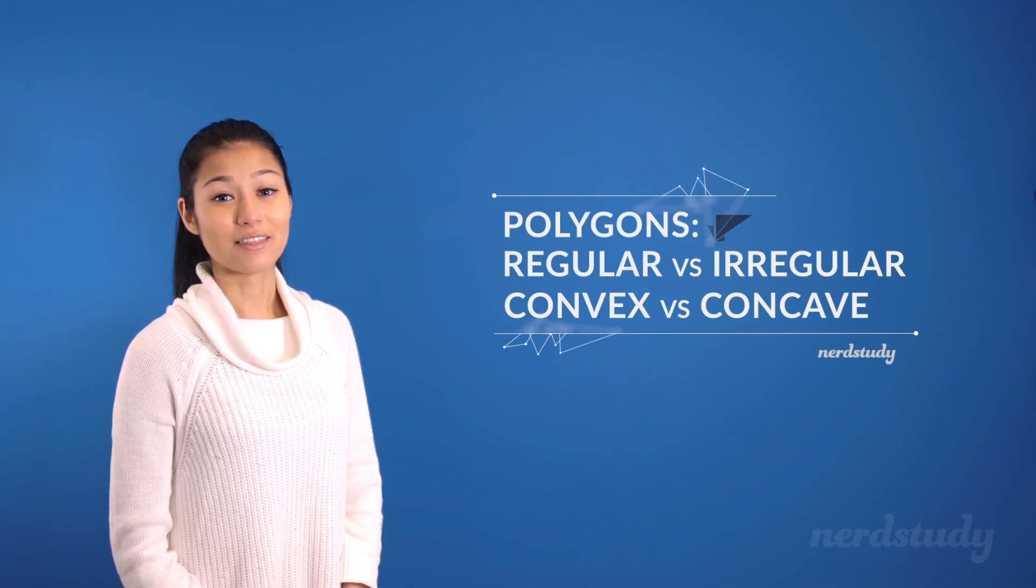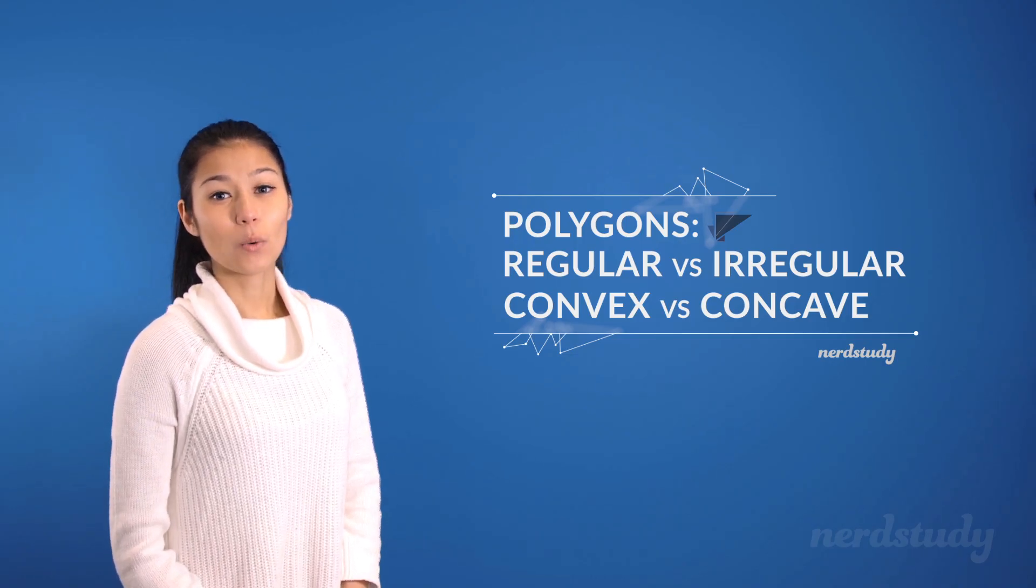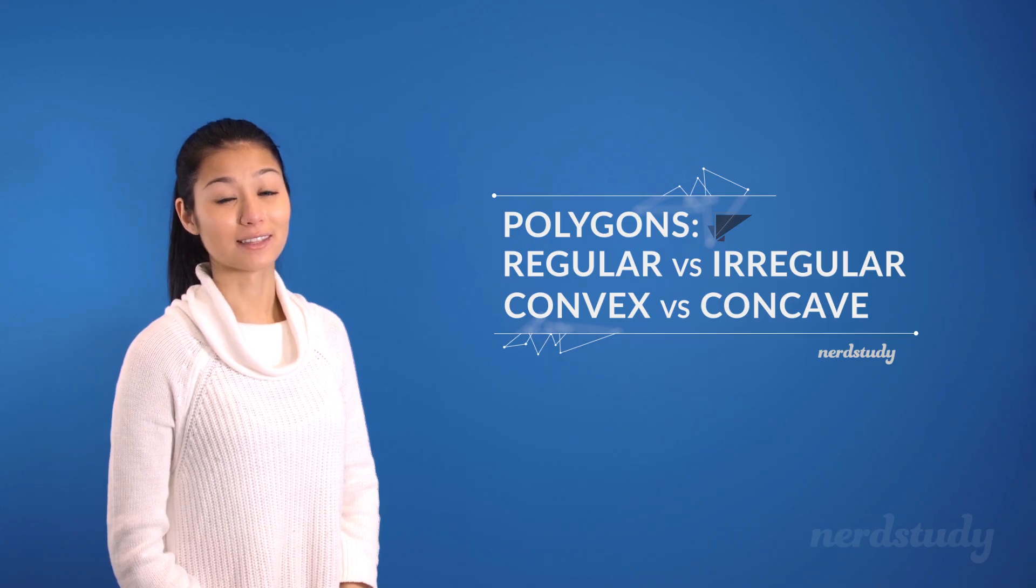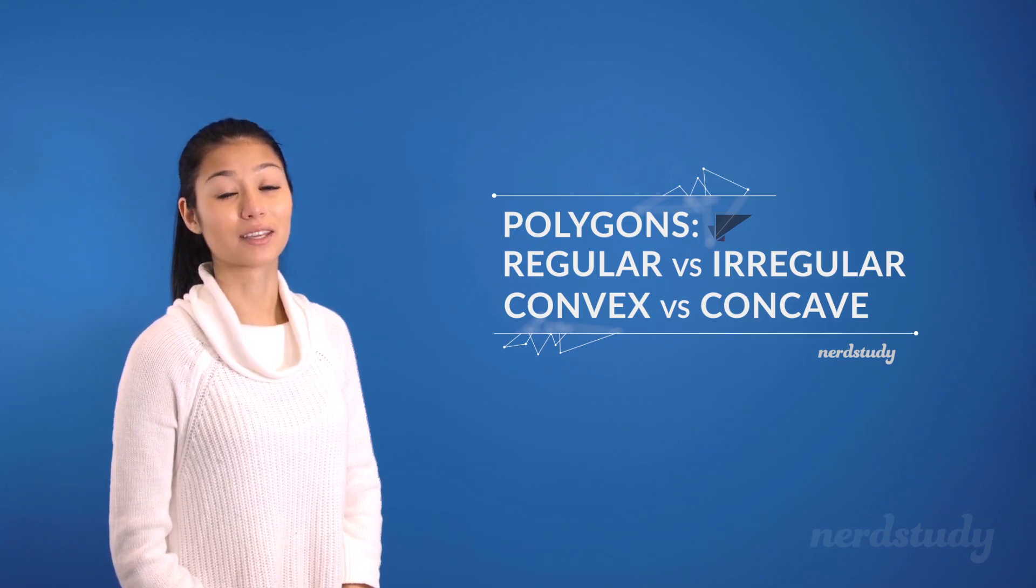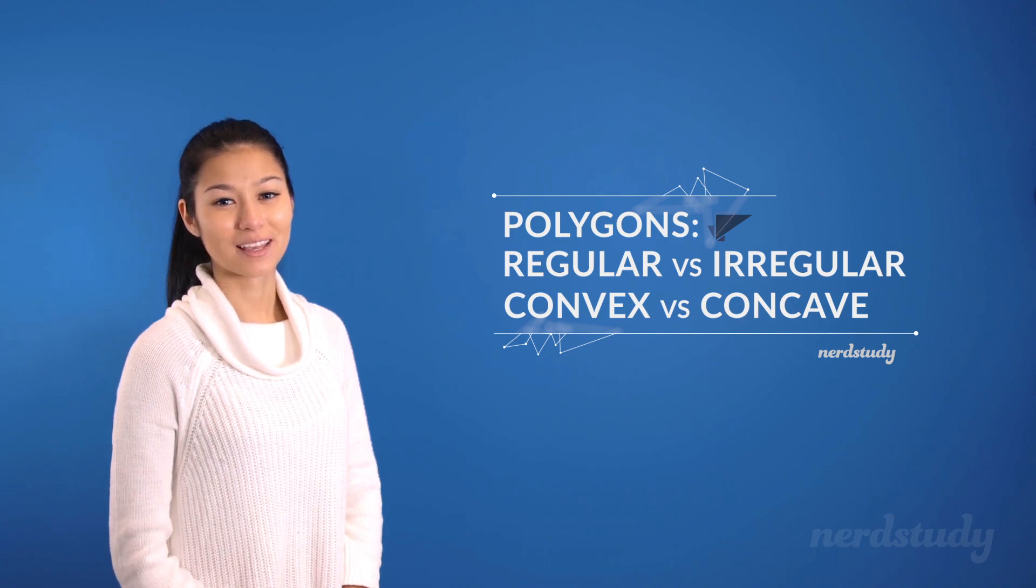So that's the end of this lesson on polygons and the different types of polygons we can come across. We hope you guys practice identifying what we've learned in this lesson to get a better idea of the characteristics of different polygons. And until next time, have a good one.